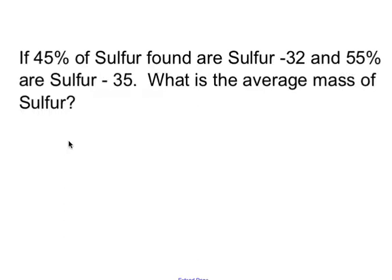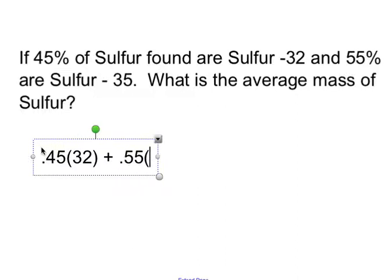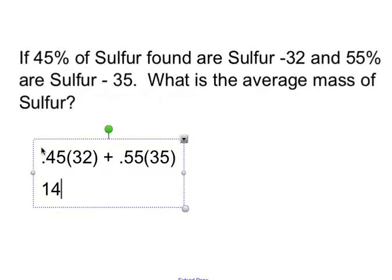If I have this problem: if 45% of sulfur found are Sulfur-32, and 55% of sulfur are Sulfur-35, what is the average mass of sulfur? So what we're going to do is take 45% and turn it into a decimal point. We move that decimal point over two places to the left, so it's 0.45. We're going to multiply that by the atomic mass, so Sulfur-32, the atomic mass is 32. We're going to add that to 0.55, multiply that by the atomic mass of Sulfur-35, which is 35. If I put that in the calculator, it's going to be 14.4 plus 19.25, which equals 33.65.